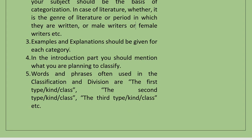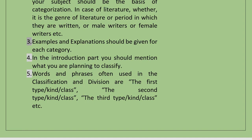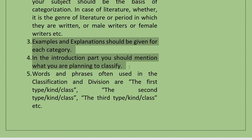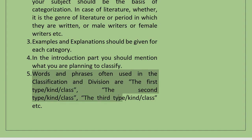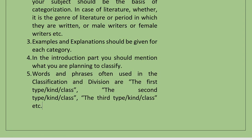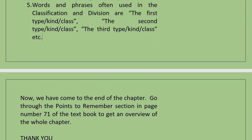Examples and explanations should be given for each category. In the introductory paragraph, you should mention what you are planning to classify. Words and phrases often used in Classification and Division essays are: first type, or the first kind, or first class; the second type, second kind, or second class; third type, third kind, or third class, etc. You will have to use these phrases often in classification and division essays.